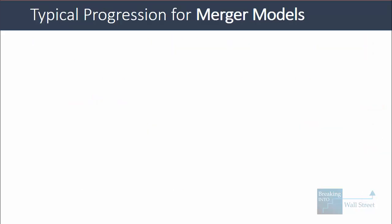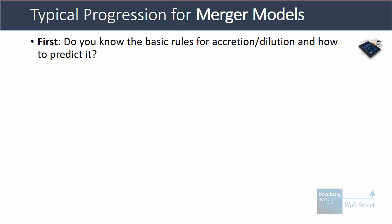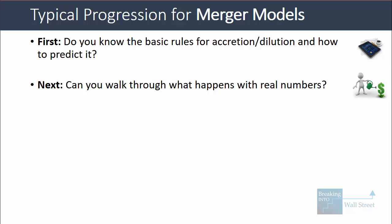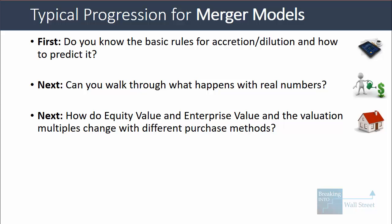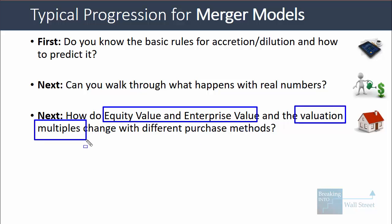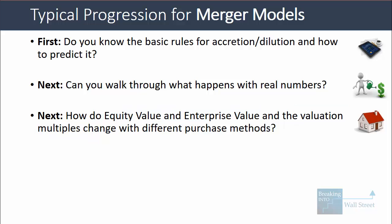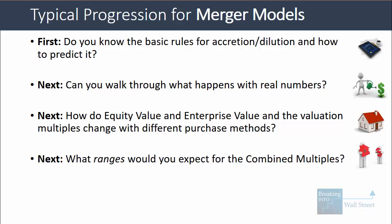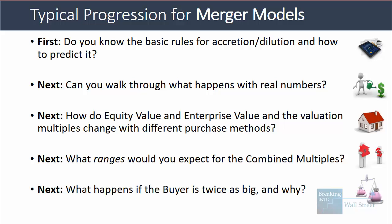A typical progression for merger models and M&A deals might be the following. First, they'll ask a simple question to test whether you know the basic rules for accretion dilution and how to predict it. Then they may ask you to walk through the full model using real numbers. Then they'll ask about how equity value, enterprise value, and valuation multiples change with different purchase methods and deal terms. Then they'll get into more difficult hypothetical questions — such as what range would you expect for combined multiples under different scenarios, or what would happen if the buyer were twice as big, and what's the intuition behind that?